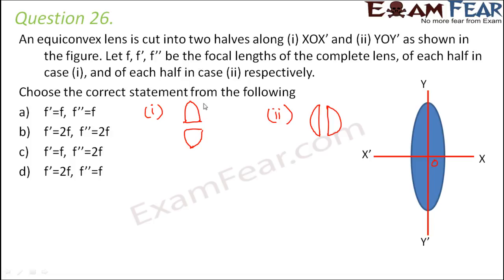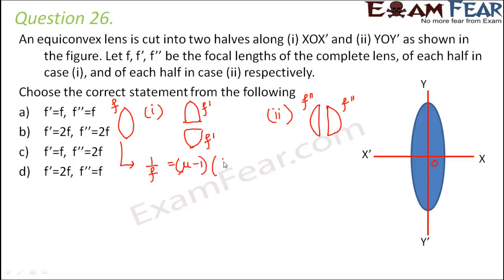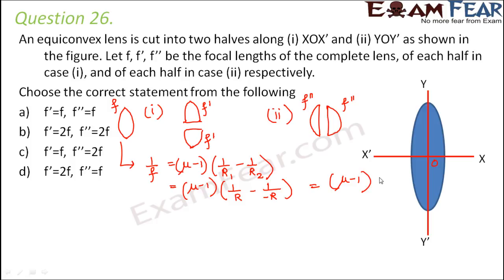As per the question, in case 1 the focal length of each half is F', in case 2 the focal length of each half is F'', and the focal length of the complete lens is F. Now let us solve it. Using the lens maker formula: 1/F = (μ−1)(1/R₁ − 1/R₂). Since R₁ and R₂ are equal in magnitude for an equi-convex lens, this gives (μ−1)(1/R − 1/(−R)) = (μ−1)(2/R).